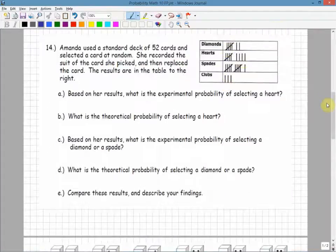Let's look at this example here. Amanda uses a standard deck of 52 cards. She recorded the suit of the card she picked and then replaced the card. The results in the table are to the right. So first of all, what I want is the total number of times she conducted the test. So this is all tallies. We've got 5, 10, 15, 20, 22, 26, 27, and 30. So the test was conducted 30 times.